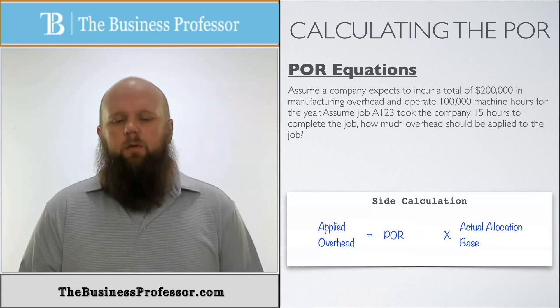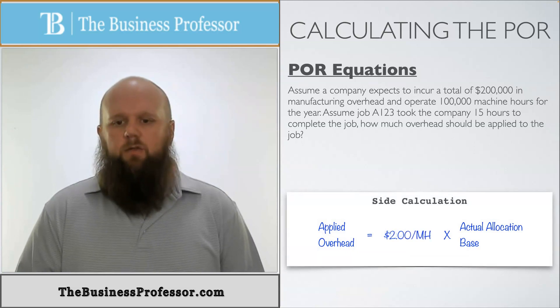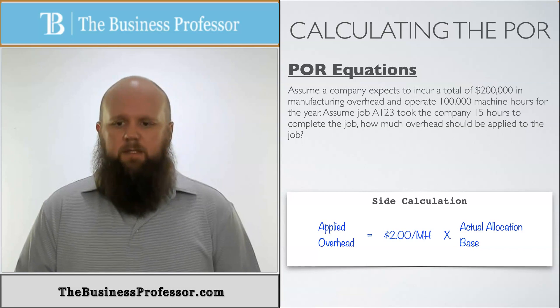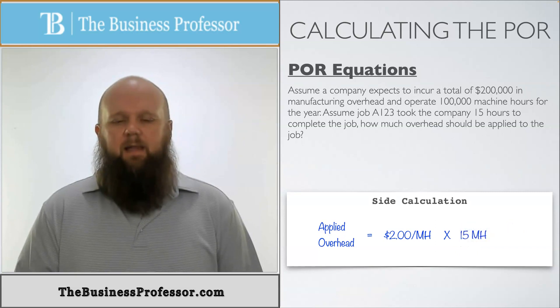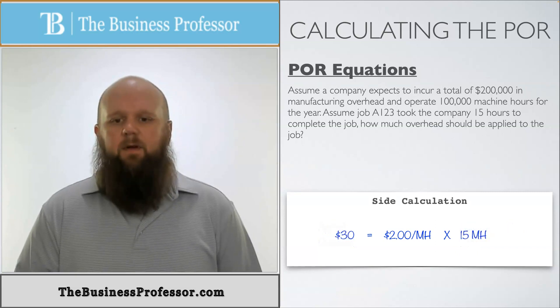Well, again, we know the POR. POR is going to be $2 per machine hour. We calculated that a few minutes ago. The actual allocation base for this job is going to be 15 hours. So I'm going to multiply that two times the 15, and that's going to give me an applied overhead of $30.